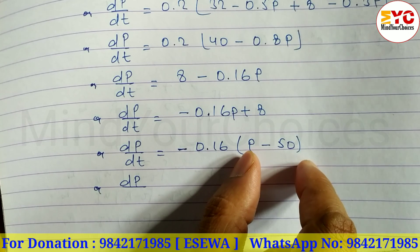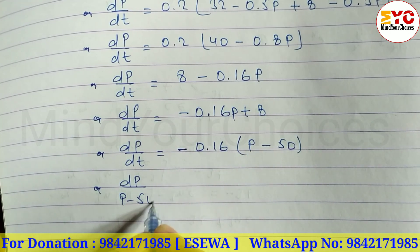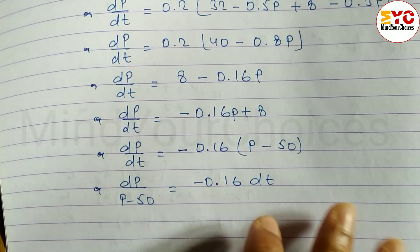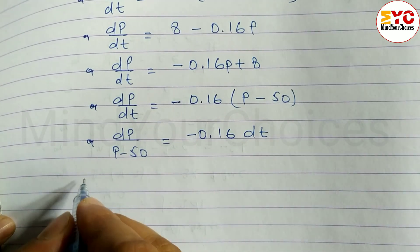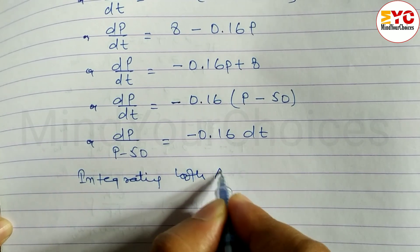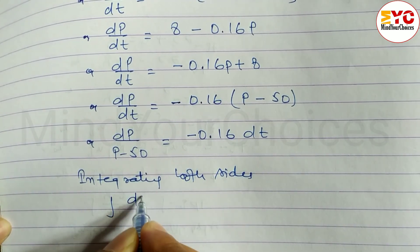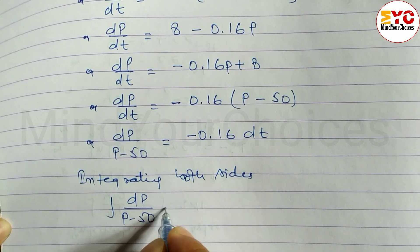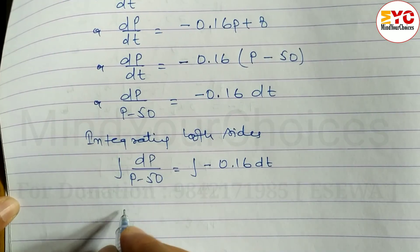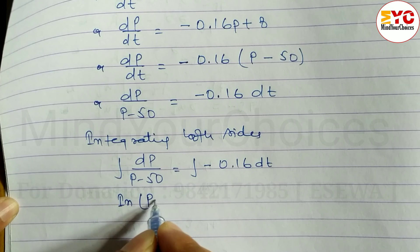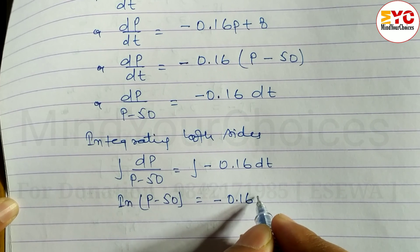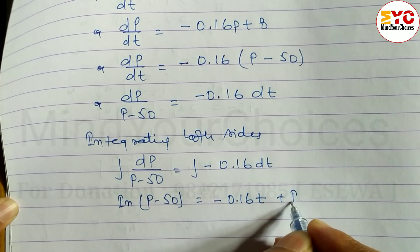Separating variables and integrating both sides: ∫dp/(p − 50) = ∫−0.16 dt. Integrating gives: ln(p − 50) = −0.16t + ln c.